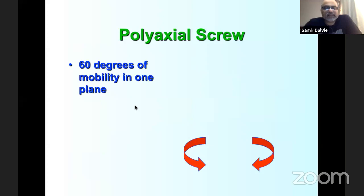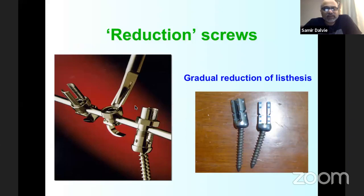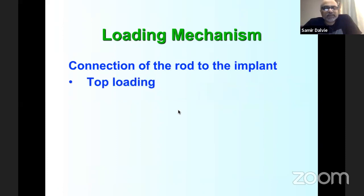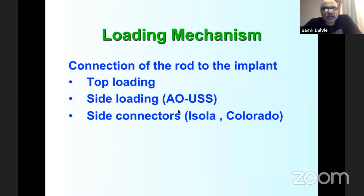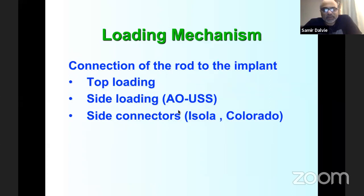Reduction screws have long ears for gradual controlled correction, useful for spondylolisthesis, scoliosis, and kyphosis. Top-loading mechanisms are now standard; side-loading systems like AO and Isola/Colorado used side connectors in earlier eras. The Moss Miami system used its inner-outer mechanism for secure rod fixation.